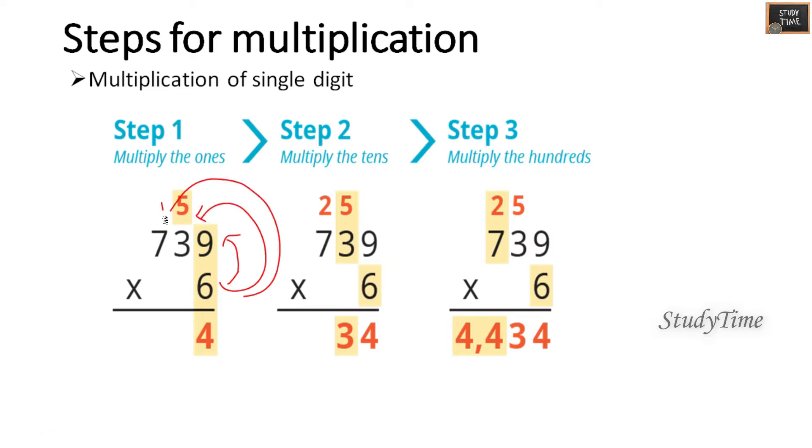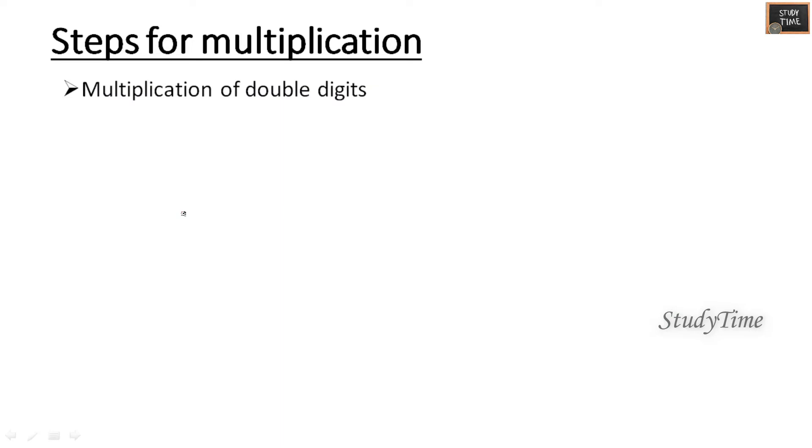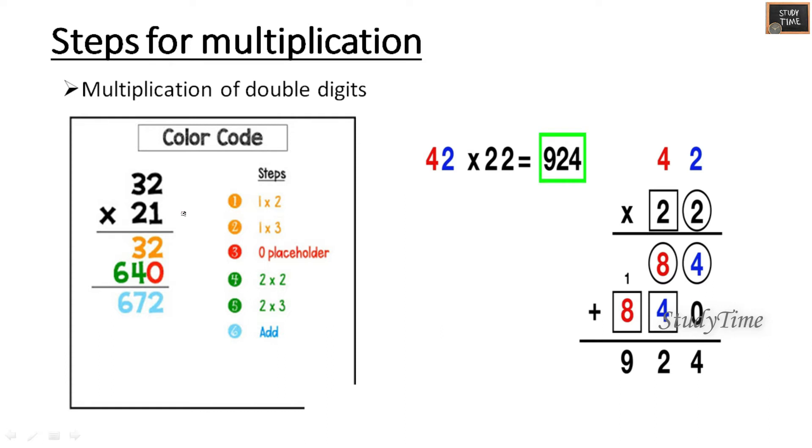For multiplication of double digit, let me explain with the example here, 42 into 22. First multiply this 2 with 42, you will be writing here 84. Then leave this place for placeholder. Again you have to multiply 2 with 42, you will be getting 84. Then you have to add: 4 plus 0 is 4, 8 plus 4 is 12, and 8 plus 1 is 9. So this is the answer.